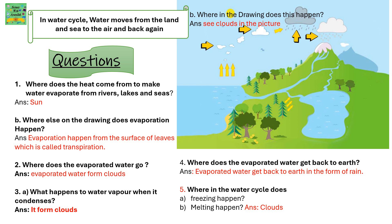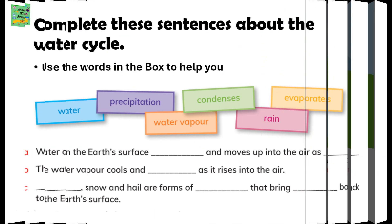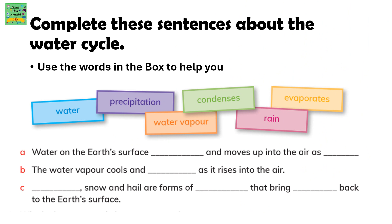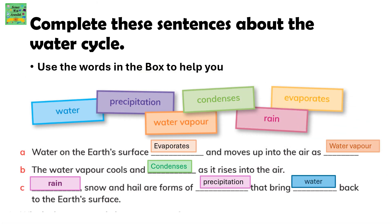Where in the drawing does this happen? You can see the clouds in the picture. Now here is a task for you: complete the sentences about the water cycle using the words in the box. Here is the answer: water on the earth's surface evaporates and moves up in the air as water vapour. The water vapour cools and condenses as it rises into the air. Rain, snow and hail are forms of precipitation that bring water back to the earth's surface.